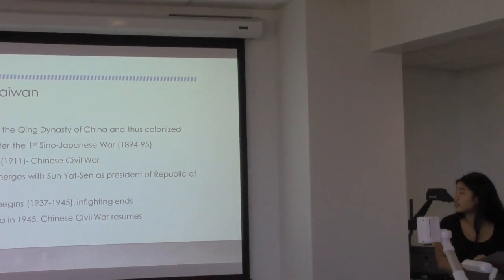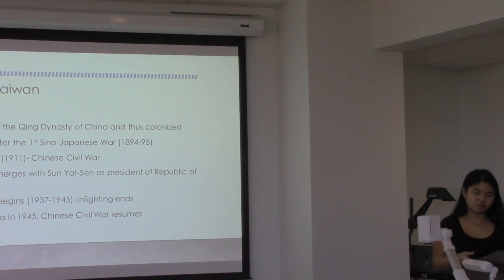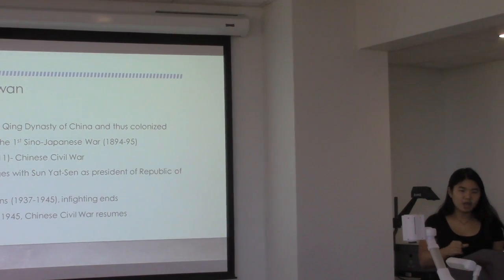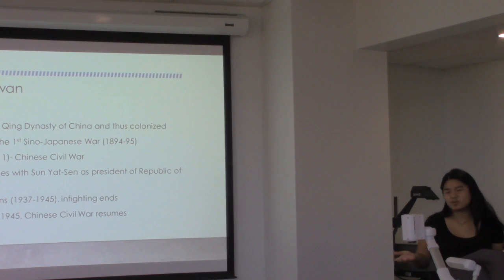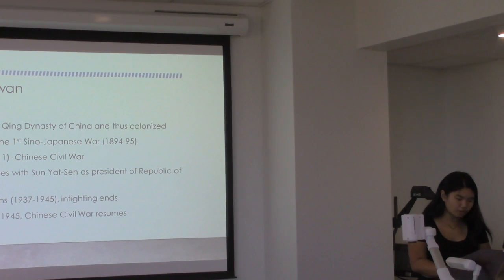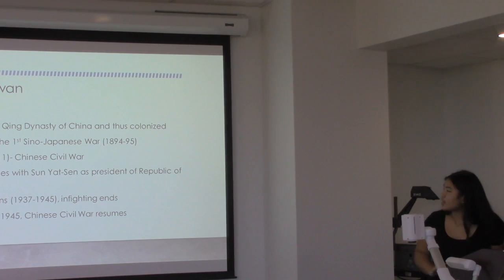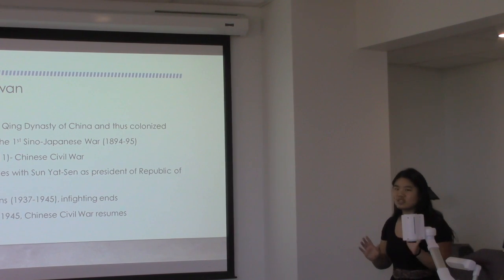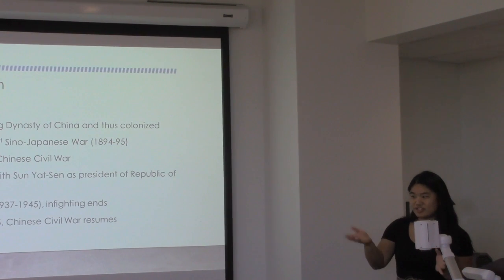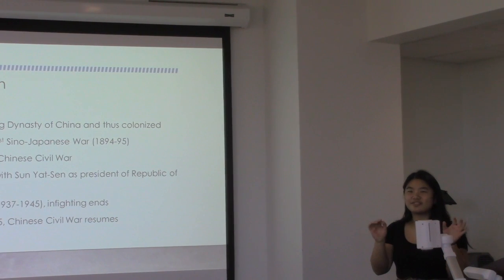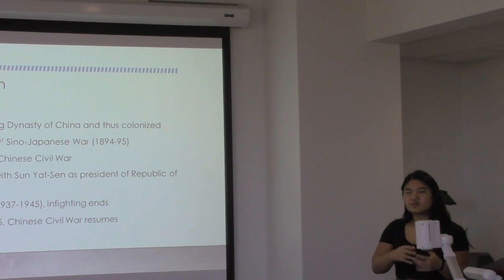The Chinese Civil War eventually became a conflict between the Communist Party of China and the KMT, the Kuomintang, which was basically the nationalist party of China. During this time there was also the warlord period, with a lot of infighting between major groups — it was basically complete chaos.